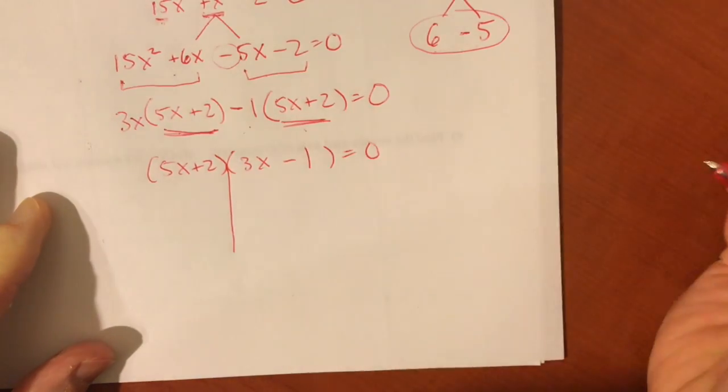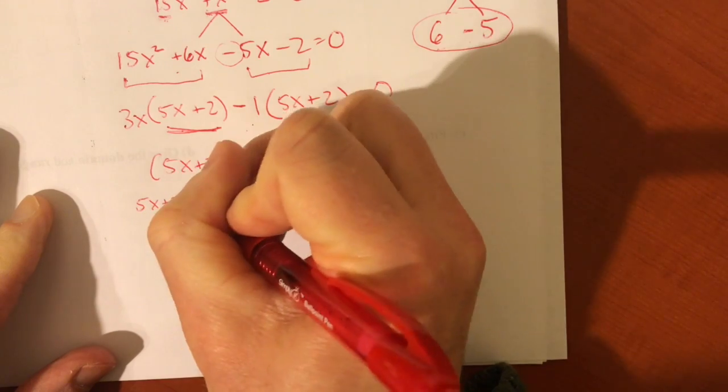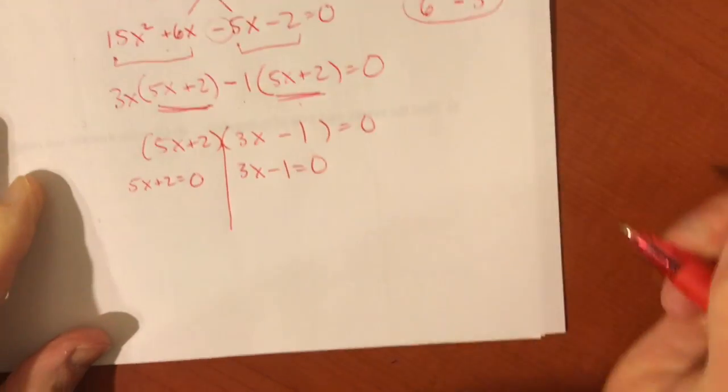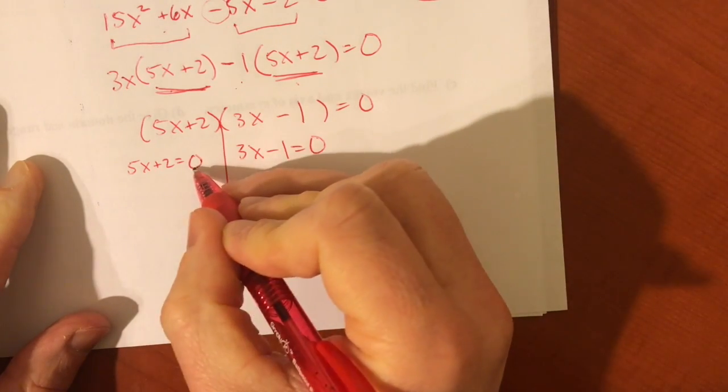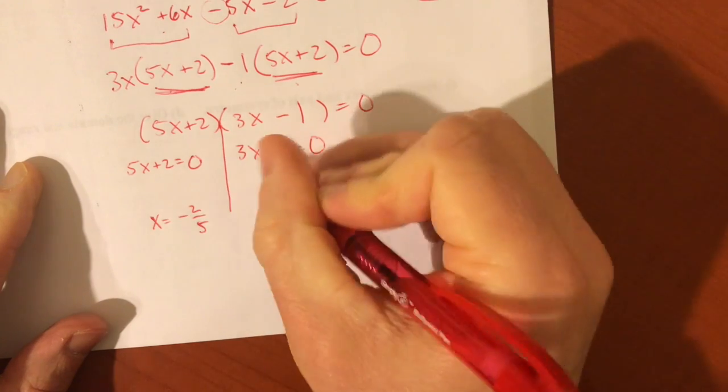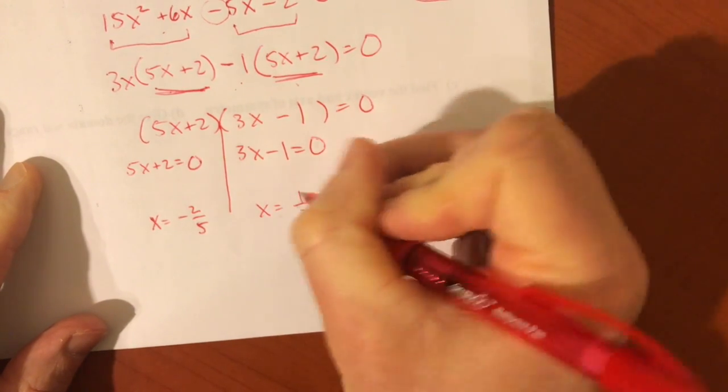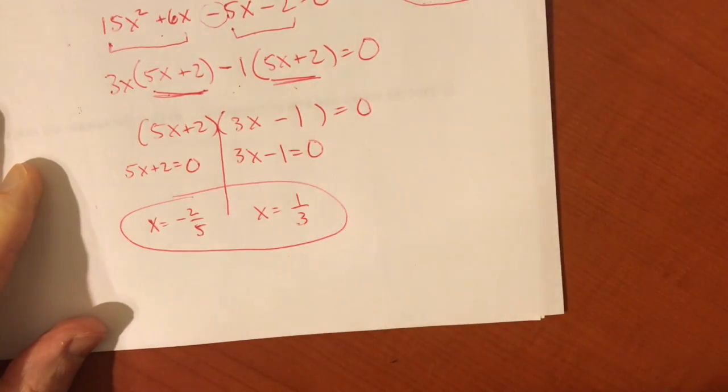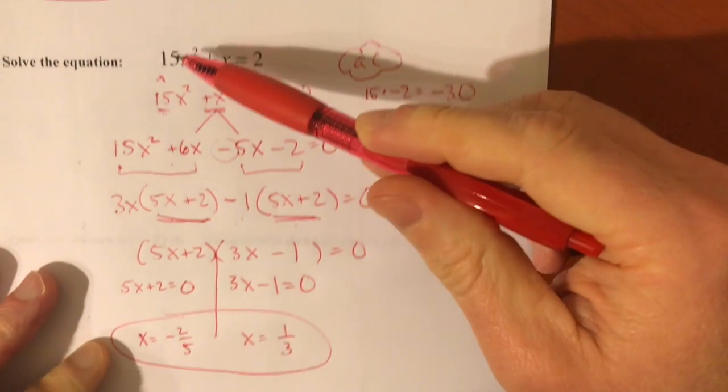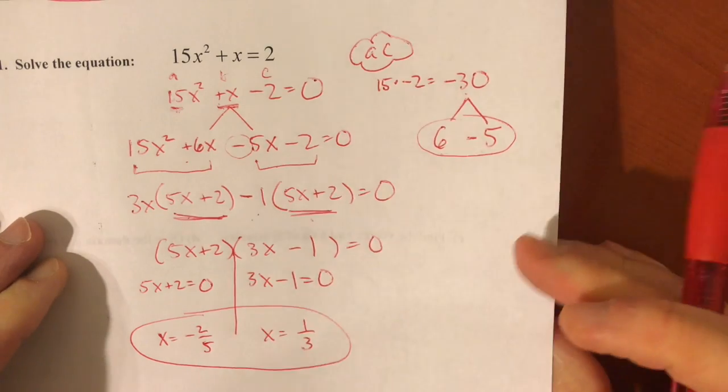But we have factored this correctly. And now we set each factor equal to 0, the same as we've always done. It's just we used a new method to get to this point. So setting this factor equal to 0, subtract 2, divide by 5, x is equal to negative 2 fifths. This one, add 1, divide by 3, x is equal to positive 1 third. Done. And there are your two solutions. If you really wanted, you could plug these back into the beginning and they would make a true statement. If you want to double check with your calculator.